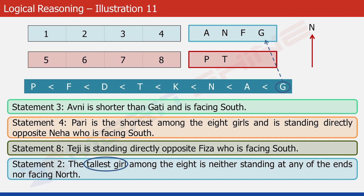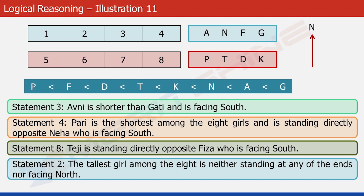Now we know the four girls who are facing south: A, N, F, and G. So the rest four obviously would be facing north. The two girls not yet placed are D and K, so let's put D and K in the north-facing block. Now this block is complete: the four girls facing north are P, T, D, and K. We are now done with the second part of solving this problem.